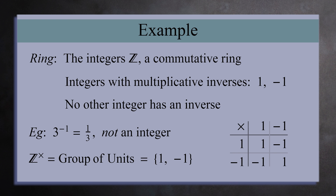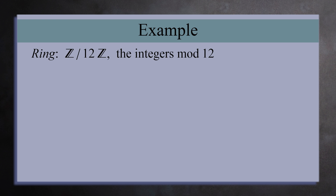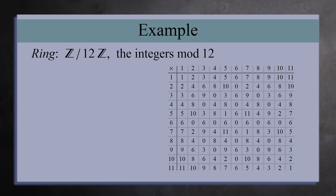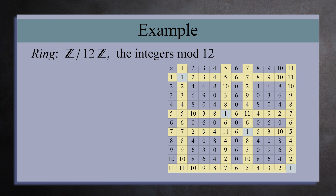Here is a group multiplication table for these units. Next, let's look at the integers mod 12. To find the units, let's look at the multiplication table for the non-zero elements 1 through 11. We can find the units by looking for rows or columns that contain the multiplicative identity 1. The only rows and columns that contain a 1 are 1, 5, 7, and 11. These are the four units for the ring of integers mod 12.